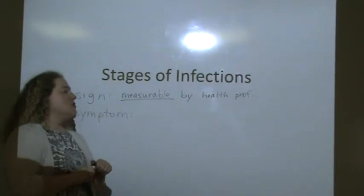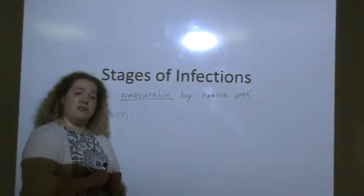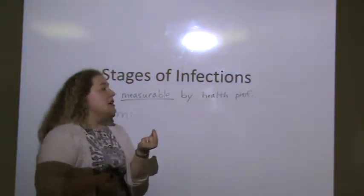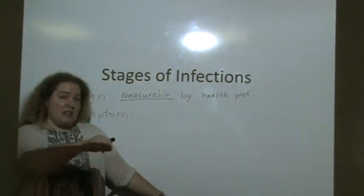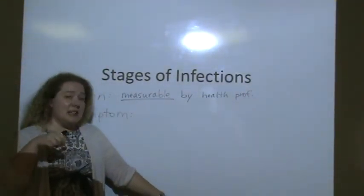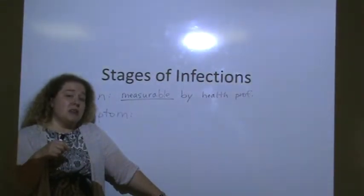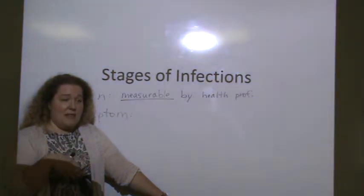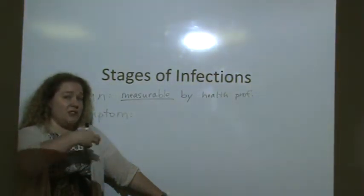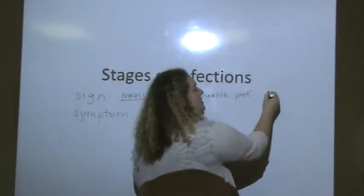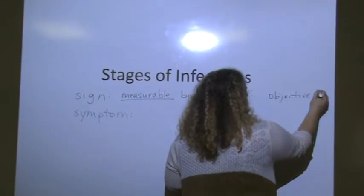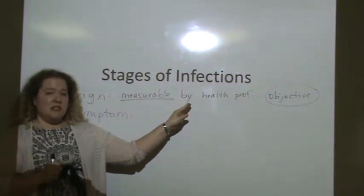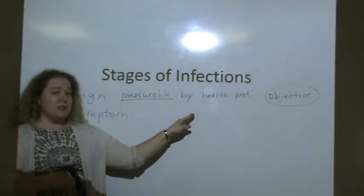So an example of that is you can take someone's temperature and determine whether they have a fever because you get a number on the thermometer readout. That is a sign. You can take someone's blood pressure and write down the number on the chart, that's a sign. You can take someone's pulse, you can count how many white blood cells they have. These are things that I can look at you and I can measure something on you just from my own perspective and it is objective. You can also think of it as the person cannot be lying about that because someone else measured it.